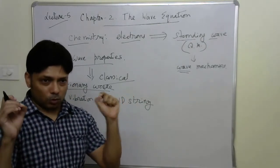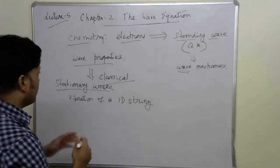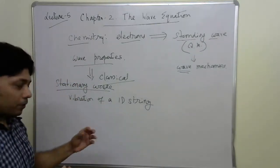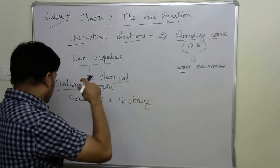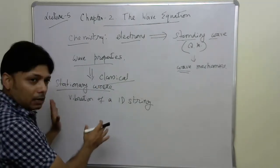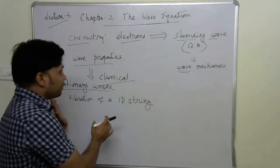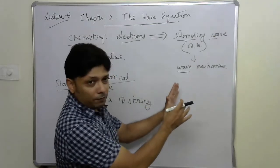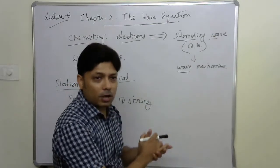The string is fixed at both ends. We have a little way to go: first we must understand the physics of the vibration of a one-dimensional string as a classical model. Once we understand that, understanding the properties of a standing wave in quantum mechanics will be much easier.